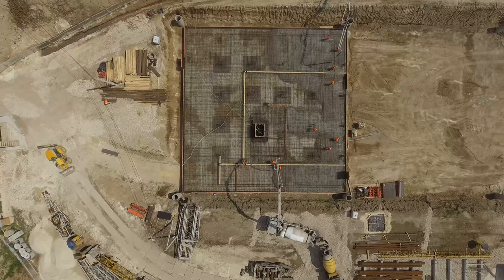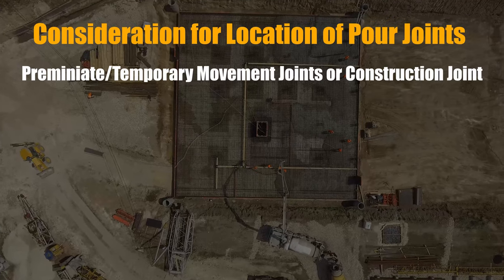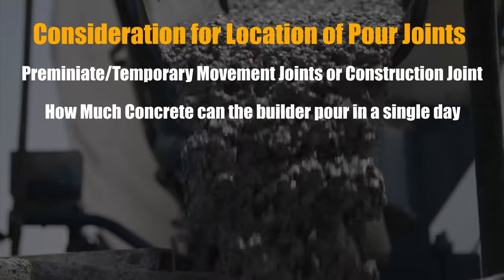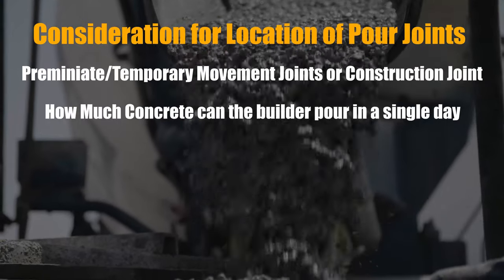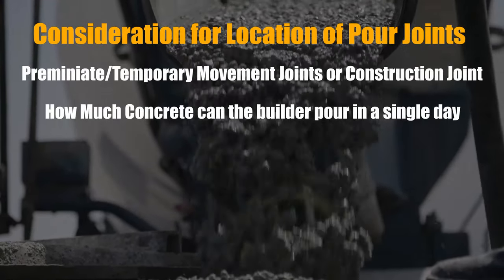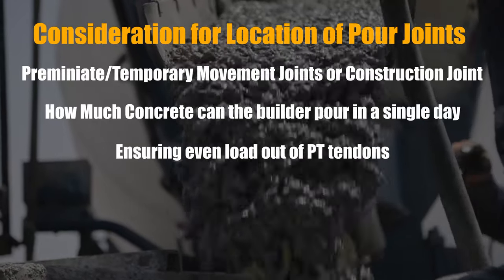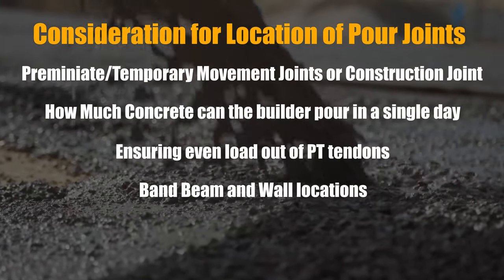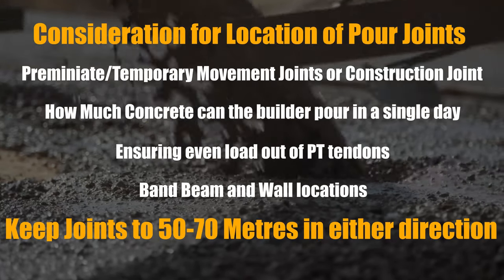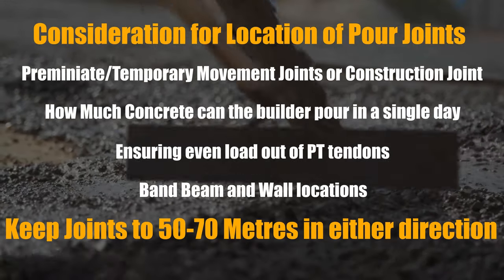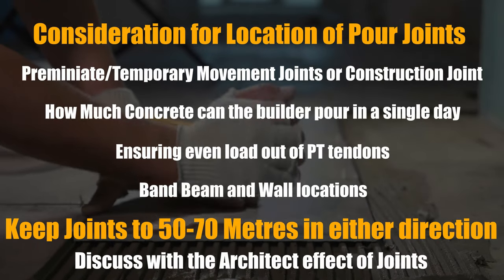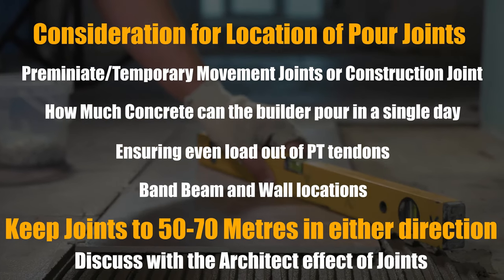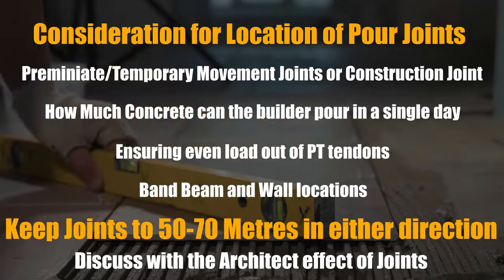When you're locating the pour joints you need to consider a couple of things. Firstly are you going to have permanent or temporary movement joints or just a construction joint? How much can actually pour in a single day? So how big of pours can you do when you're breaking up your slab? What is the construction methodology? Where your PT tendons are to accommodate them? So making sure that you've got an even spacing across the slab. Where your band beams are? Where do they clash with other walls? So making sure that they align up in logical places throughout your whole structure. So these joints roughly need to be somewhere spaced between 50 to 70 meters and then you need to have a discussion with how that affects the structure and what other aspects you may need to have in that location. As there will be movement there the architect just needs to consider jointing things like tiles for example.